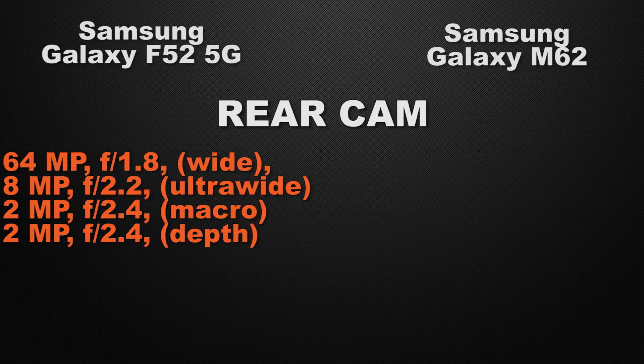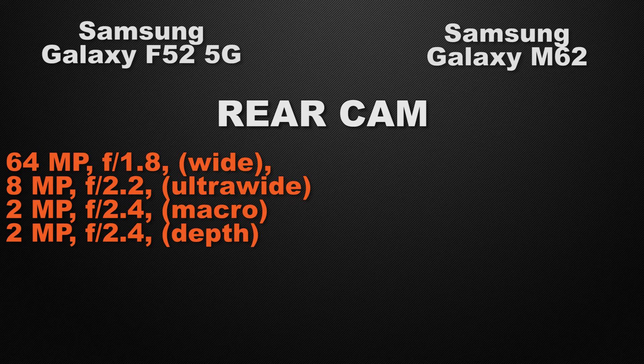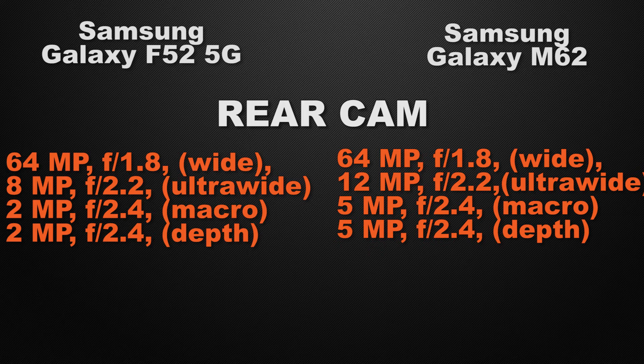Let the comparison start with the camera of the devices. Talking about the rear camera, the F52 has a quad camera setup: 64MP wide camera, 8MP ultra-wide camera, 2MP macro camera, and 2MP depth sensor. Whereas the M62 also comes with a quad camera setup: 64MP wide camera, 12MP ultra-wide camera, 5MP macro camera, and 5MP depth sensor. So the winner here is the M62 because it has better camera sensors.